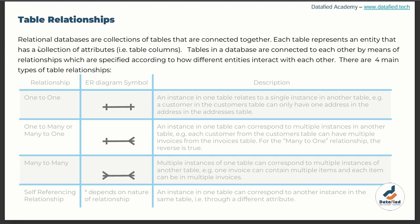Let's begin by going through this short write-up. It says relational databases are collections of tables that are connected together. Each table represents an entity that has a collection of attributes — that is, table columns. The tables in a database are connected to each other by means of relationships, which are specified according to how different entities interact with each other. There are four main types of table relationships.